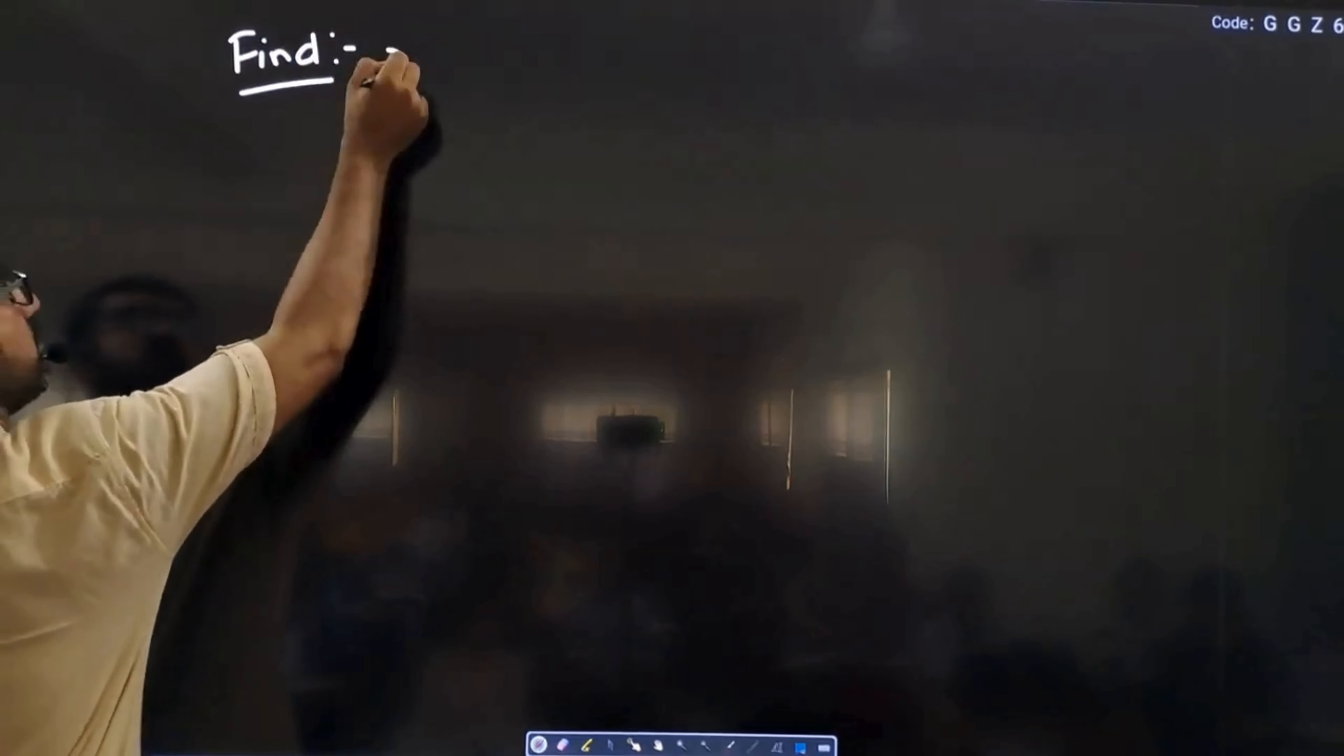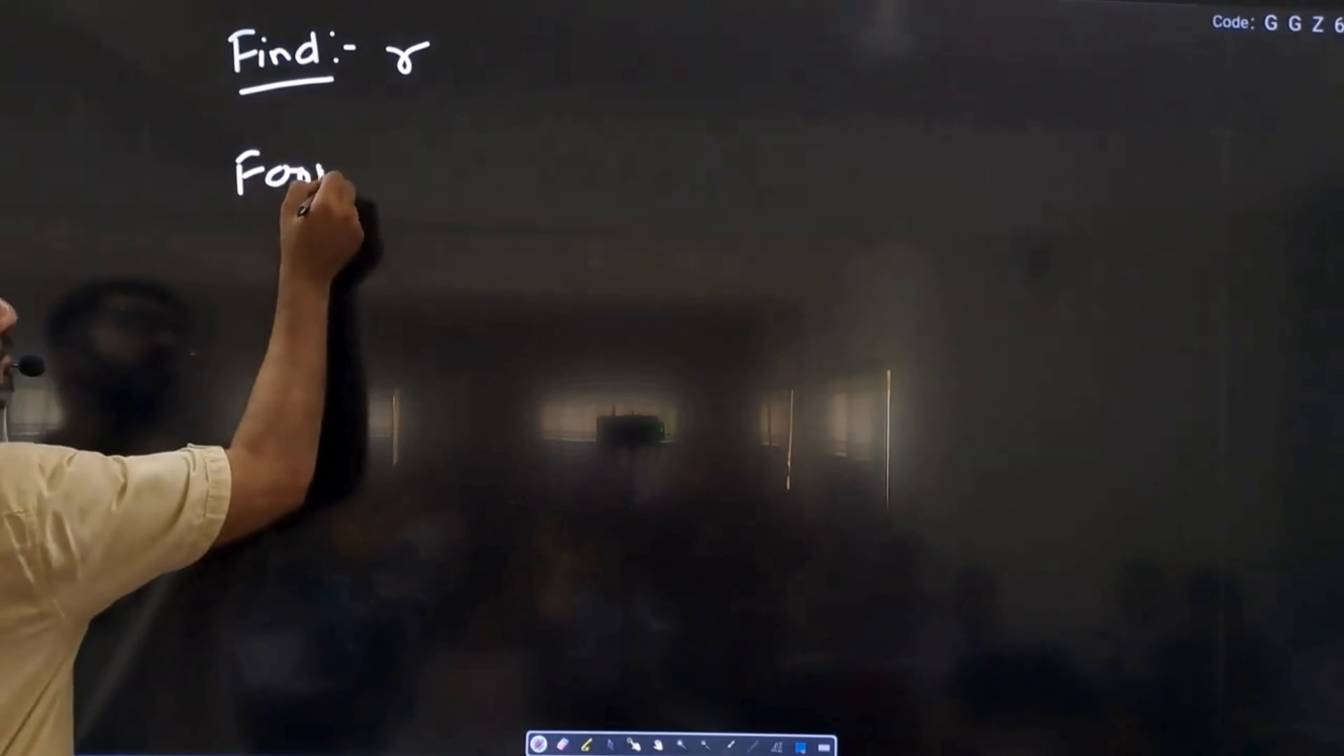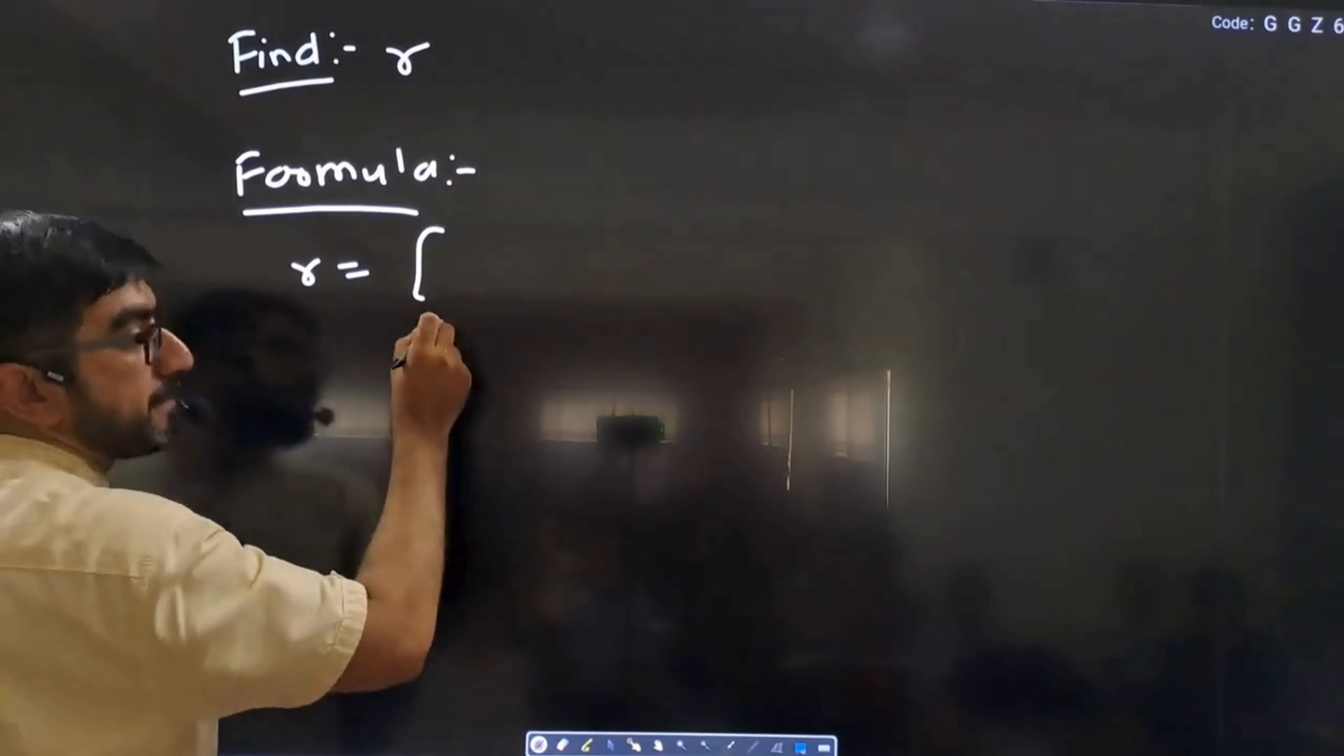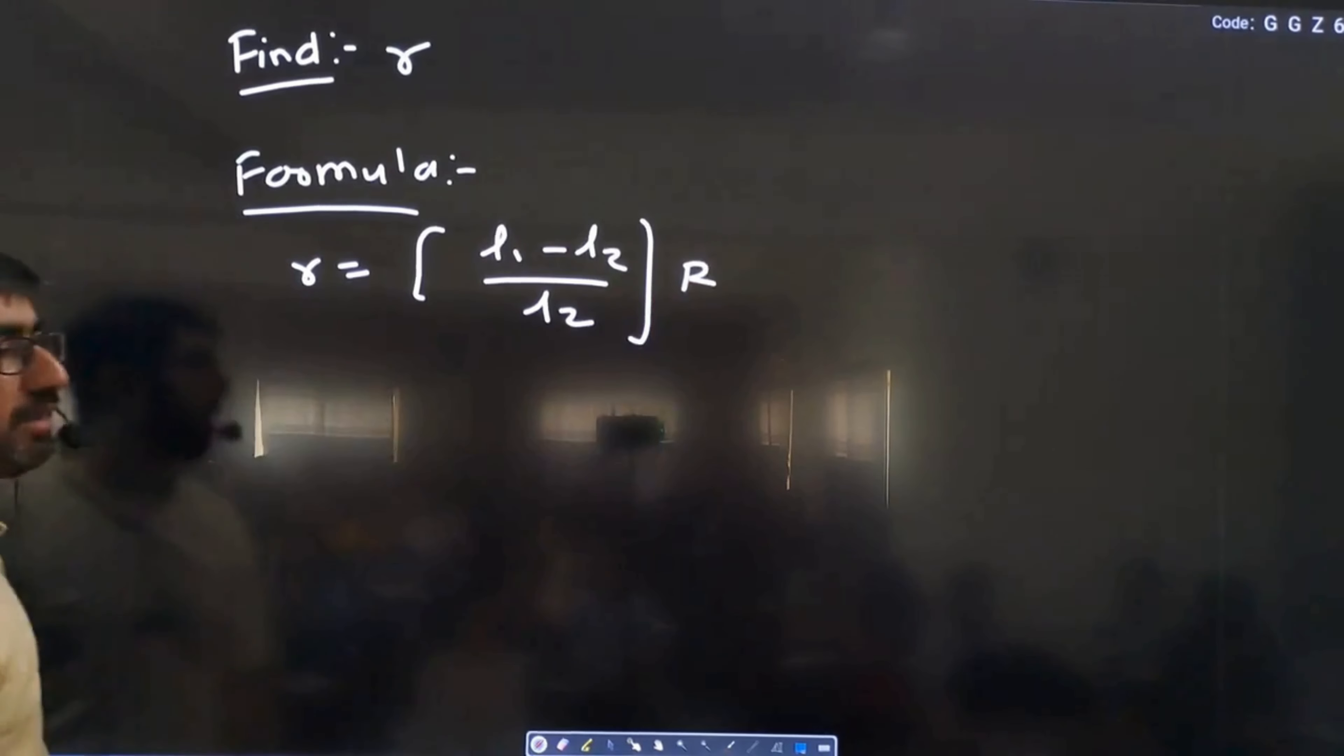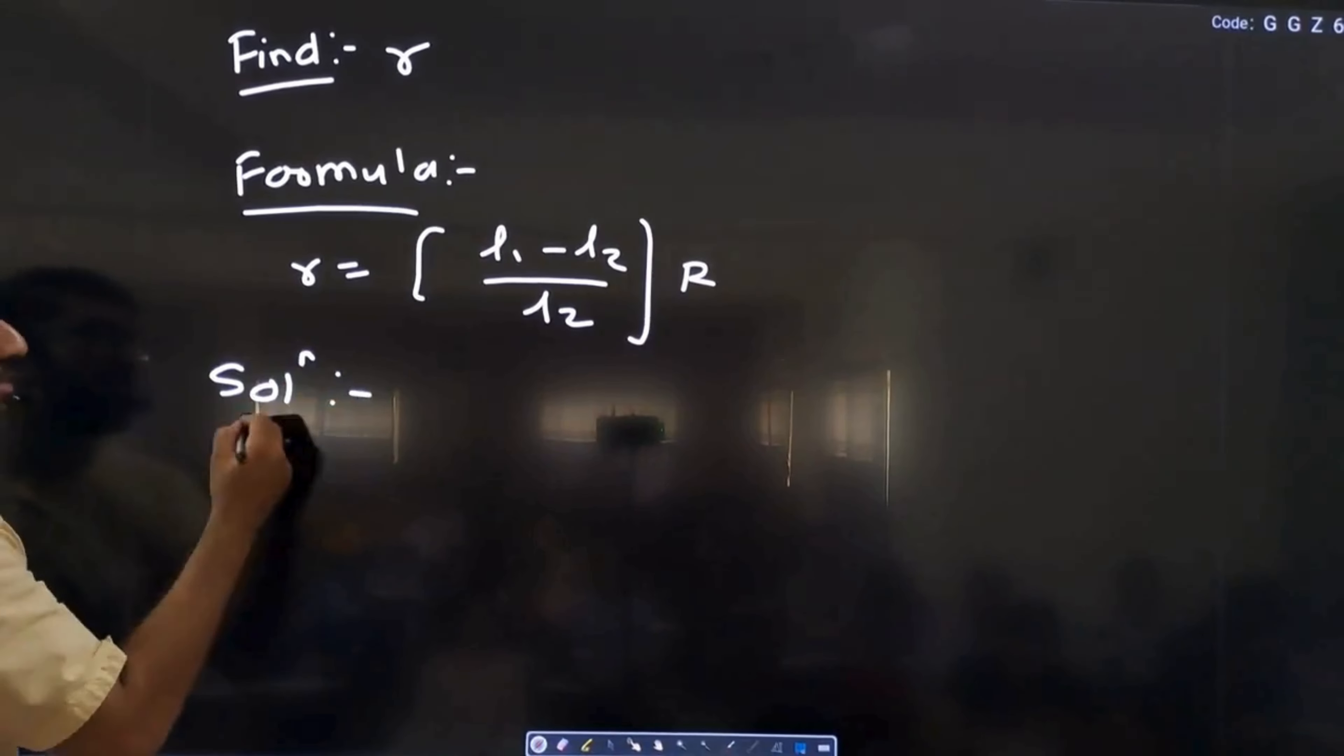What is the internal resistance? You are supposed to find out the value of r. And of course, you remember the formula. You must remember such simple formula. What is r? L1 minus L2 upon L2 into S.